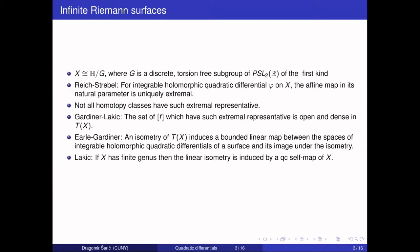Analogously to Royden's theorem in the compact case, Lakic was able to prove that if X is an infinite surface but of finite genus, then any isometry is induced by a quasiconformal self-map of X. However, it was not apparent how to extend this beyond that technique. Then in a completely new way, using integrable holomorphic quadratic differentials, Markovic was able to prove that any bounded linear isometry induces a quasiconformal mapping class of the Teichmüller space, extending Royden's theorem for arbitrary surfaces.